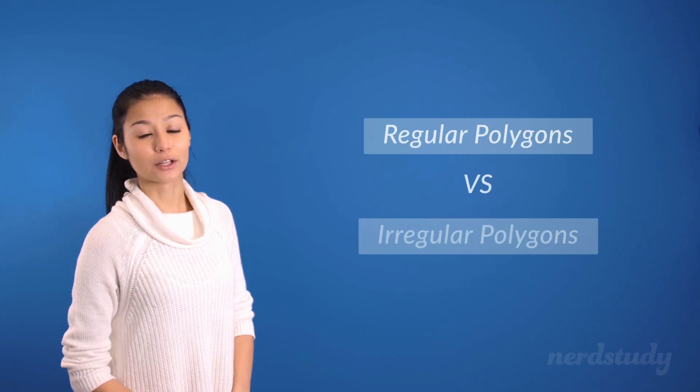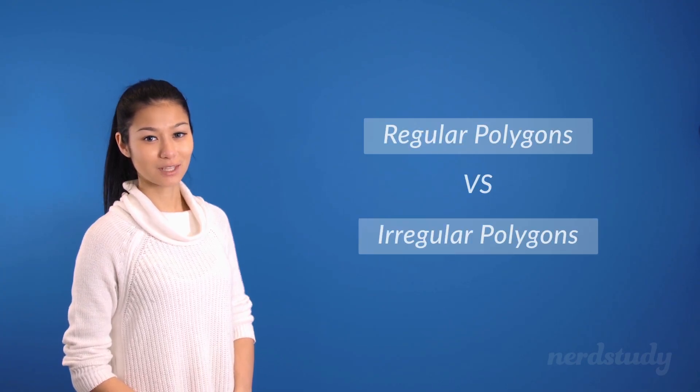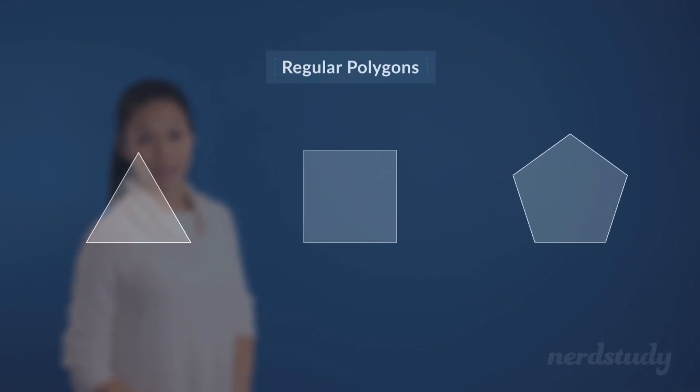Moving on with more information about polygons, we can actually categorize them into two categories, which are regular versus irregular polygons. The following are examples of regular polygons.